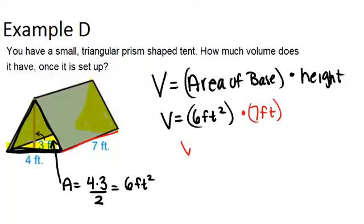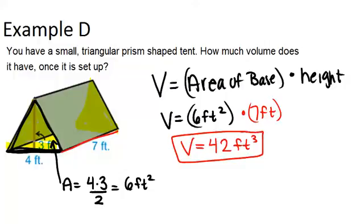So if we multiply those two, we get our total volume is 42 feet cubed. Remember that the units are going to be cubed, because we're thinking about how many little unit cubes would it take to fill up the whole tent.